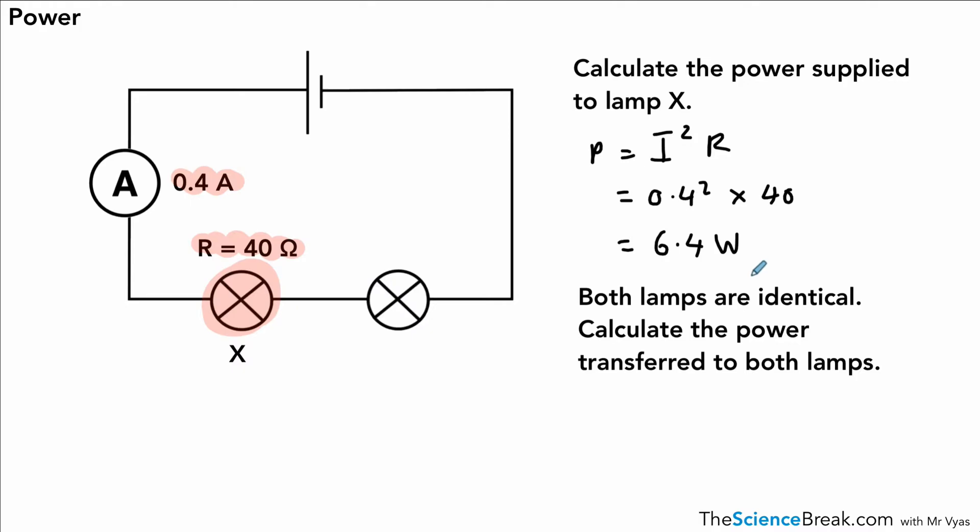Okay, now, the second question says that both lamps are identical. Calculate the power transferred to both lamps. So again, we use P equals I squared R. But this time, we need to remember that the resistance for the second lamp is also 40, if they are both identical. It tells you that in the question. And we need to remember, again, from our parallel circuits, the total resistance in the circuit is R1 plus R2. So we simply add those two together to get the total resistance.